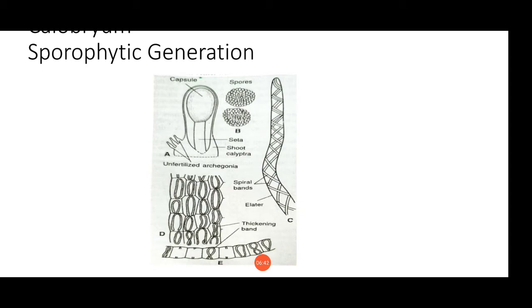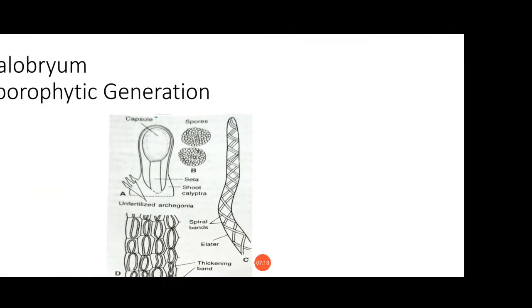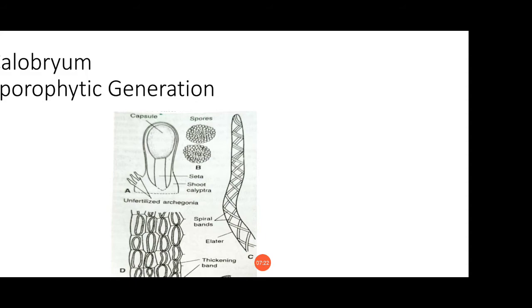The elongated wall cells each usually have a complete median annular longitudinally-oriented brown band of thickening. Inside the capsule wall, the sporogenous tissue is differentiated into spores and elaters. The spores are 18 to 30 micrometers and elaters are 6 to 10 micrometers in diameter. The spore to elator ratio is 3 to 1. The elaters are long, very slender, and gradually taper towards the tip.